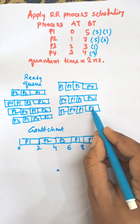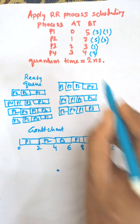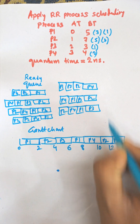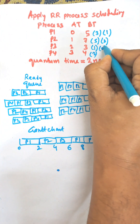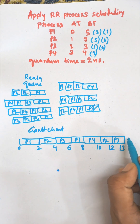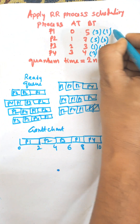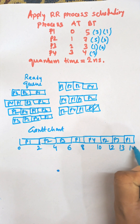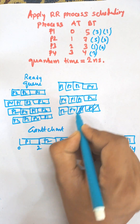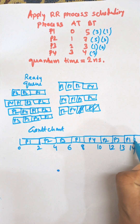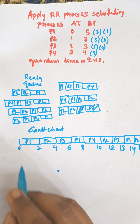Next is P3. P3 will finish its execution at time 13 and terminates. Then P1 will execute its remaining one nanosecond and terminate. Then P4 will finish execution up to time 16.